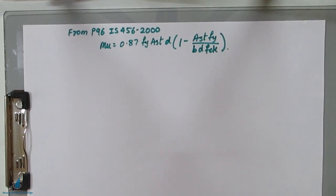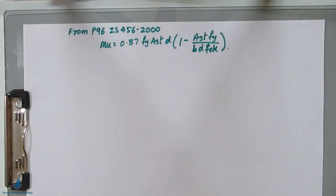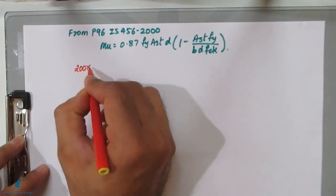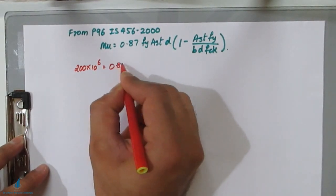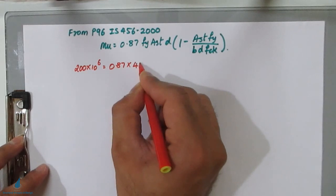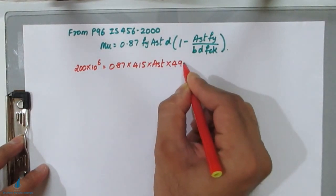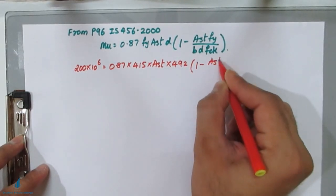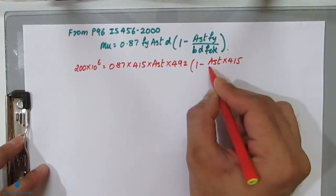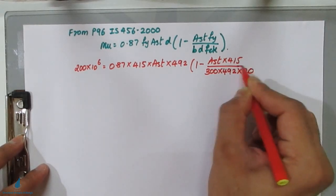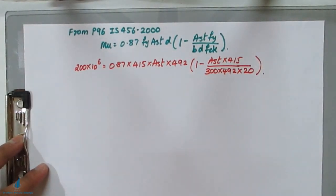Substituting the known values: 200 × 10⁶ = 0.87 × 415 × Ast × 492 × [1 − (Ast × 415) / (300 × 492 × 20)]. This gives an equation with Ast as the only unknown.